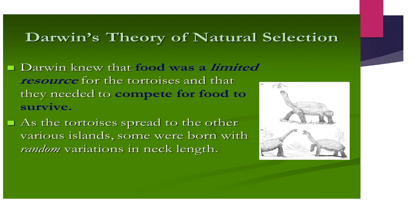This is another example of Darwin's theory of natural selection. Darwin knew that food was the limiting resource for the tortoises and that they needed to compete for food to survive. As the tortoises spread to various other islands, some were born with random variations in neck length. This is one of the examples for Darwin's theory of natural selection.